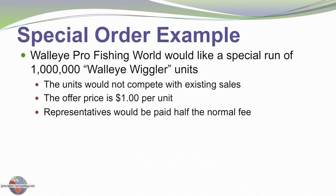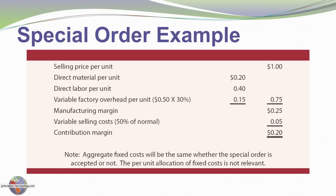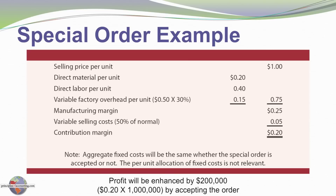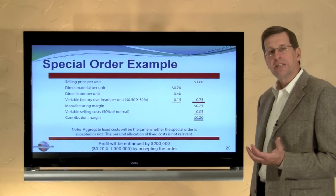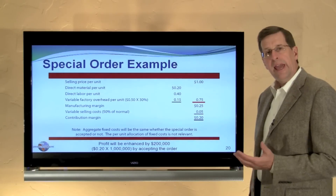They've been approached by Walleye Pro Fishing World who wants to order one million Walleye Wiggler Lures. The units would not compete with existing sales, and they're offering to pay $1.00 per unit. The sales representatives would be paid a five-cent commission rather than the normal dime. This offer is priced below the noted cost of production of $1.10. However, Lunker Lures should accept the order — the $1.00 selling price covers variable costs, leaving a 25-cent non-manufacturing margin, minus the five-cent commission, for a contribution margin of 20 cents per unit. Times one million units, we enhance overall profitability by $200,000. The fixed costs are there in any event; we're looking at incremental revenue versus variable costs, and it computes favorably.